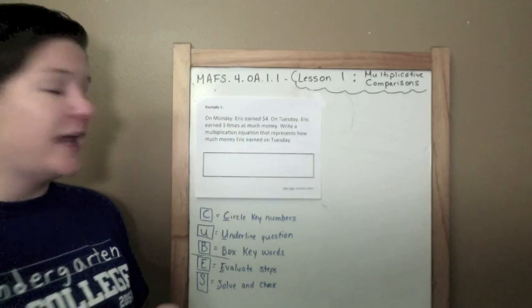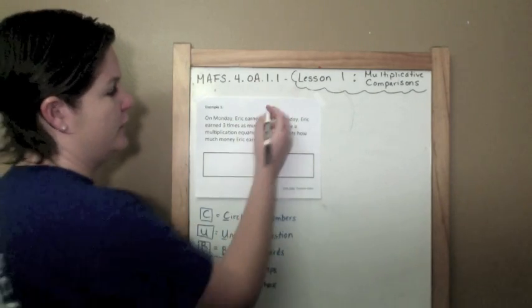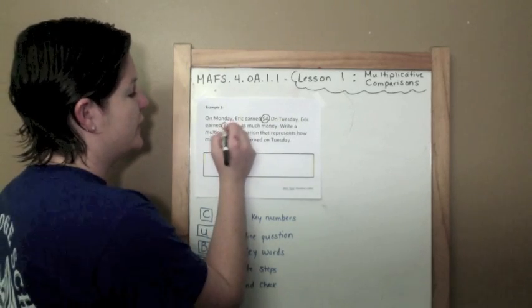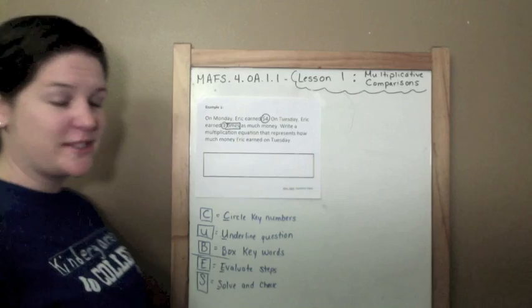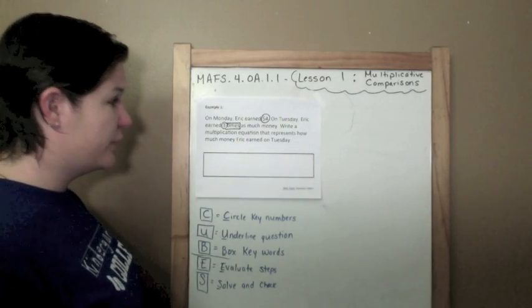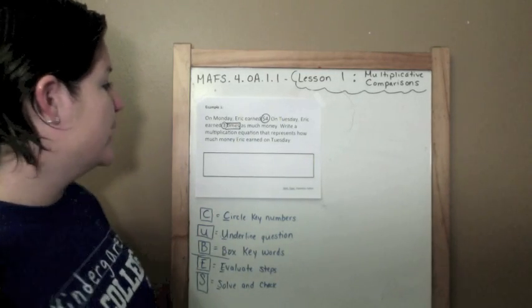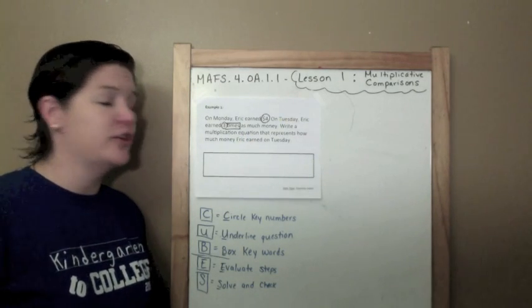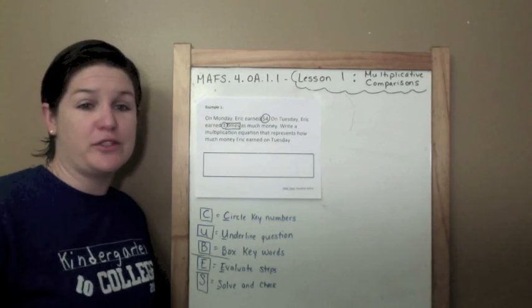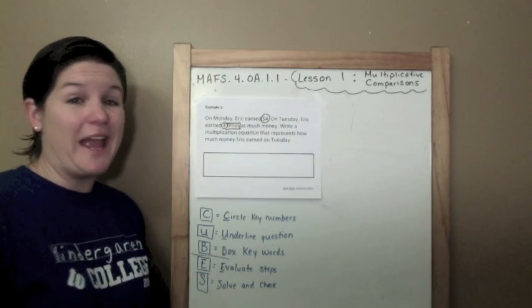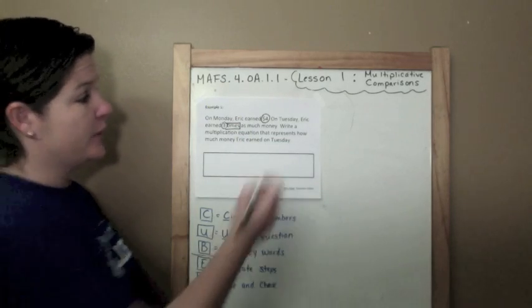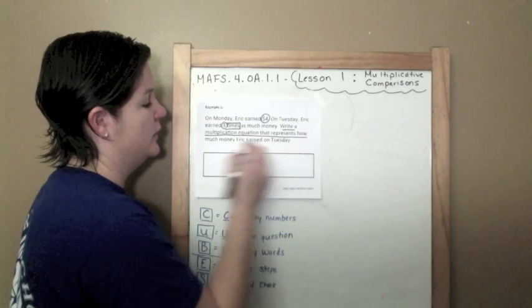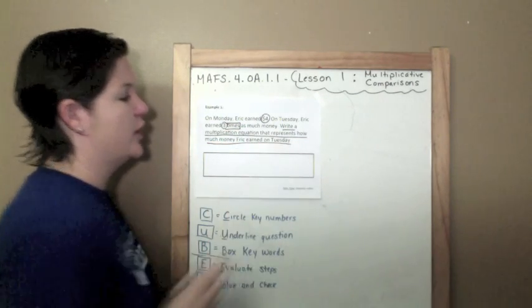On Monday, Eric earned $4. On Tuesday, Eric earned three times—I'm going to box that word times because that's a key word for the question—three times as much money. Write a multiplication equation that represents how much money Eric earned on Tuesday. Now I can't underline the question because there is no question, but I am going to underline what the problem is asking me to do. The problem is asking me to write a multiplication equation that represents how much money Eric earned on Tuesday.